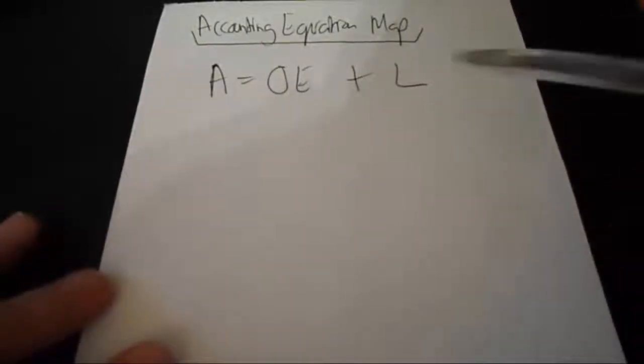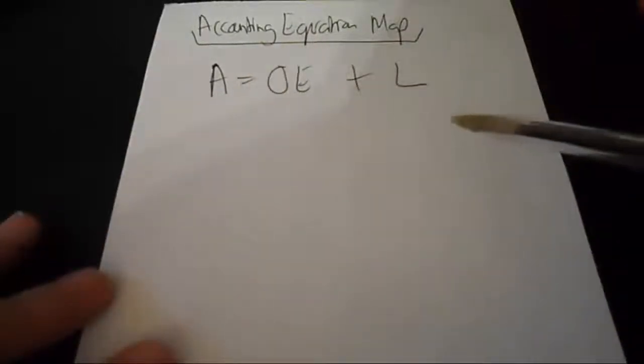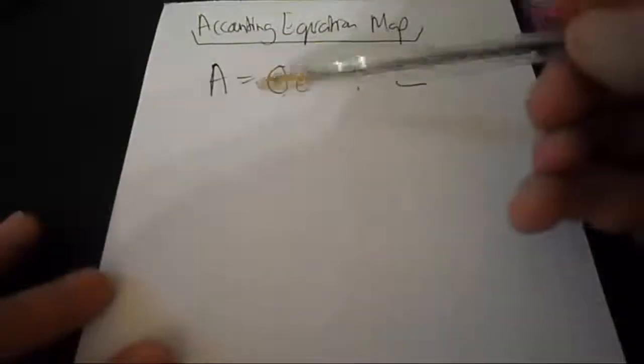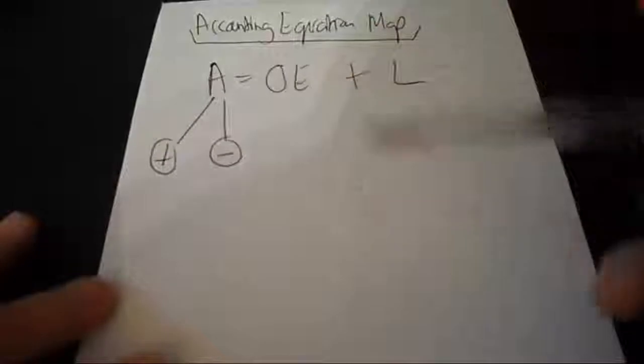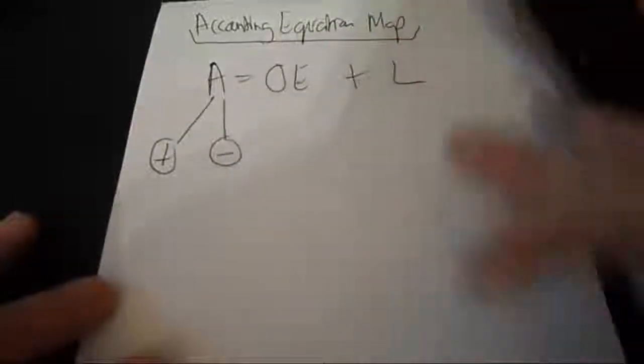But now we need to break this down further. We need to know when an asset increases or when an asset decreases, what will happen to it? On which side will we put it, on the debit side or on the credit side?